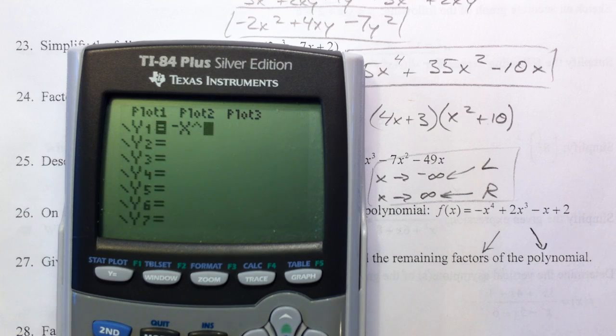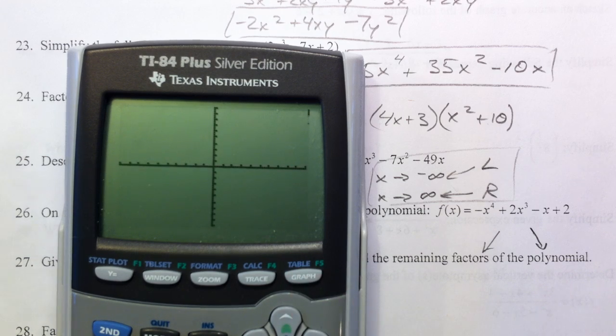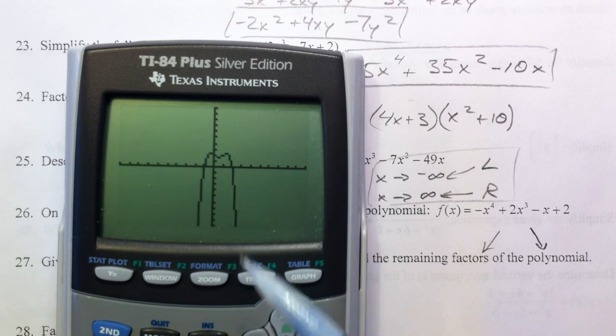Negative x to the fourth, plus 2x cubed, minus x, plus 2. And you can just graph it. And adjust this window.